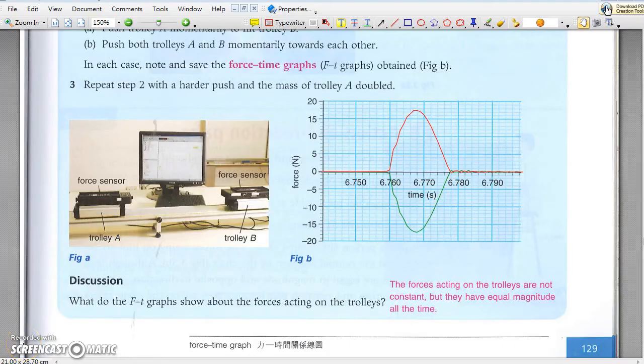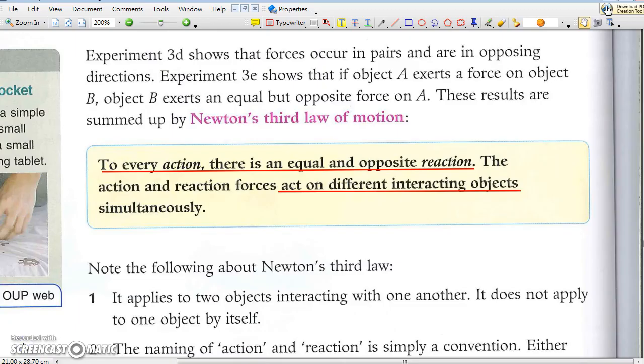The force-time graph in this experiment shows that the forces are not constant, but the forces are always the same in magnitude, although they are opposite in direction. Newton's third law says that for every action, there is an equal but opposite reaction. The two forces are the same in magnitude but opposite in direction, and they act on two different interacting bodies.